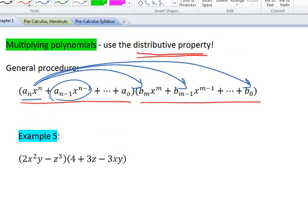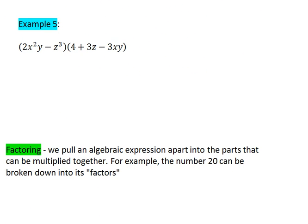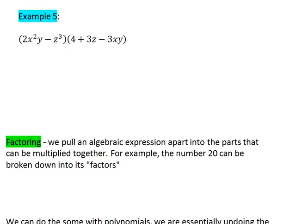We have example 1, where we have the polynomial 2x squared y minus z cubed times the polynomial 4 plus 3z minus 3xy. If you think you know how to do this one already, try it on your own and then compare your answer when you're ready. For this, we'll start with the first term in the first polynomial, the 2x squared y,